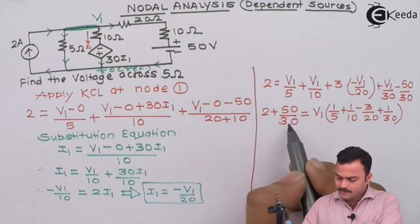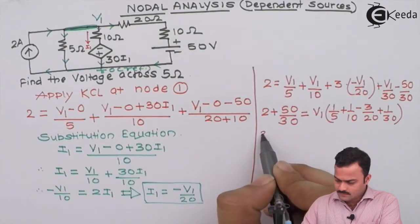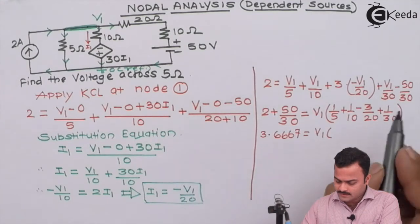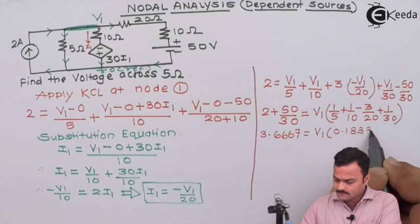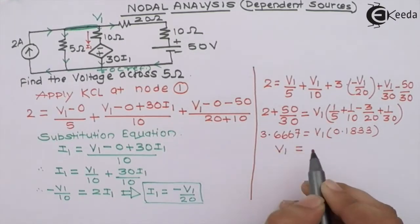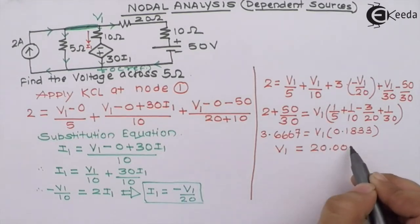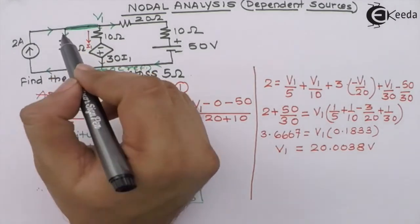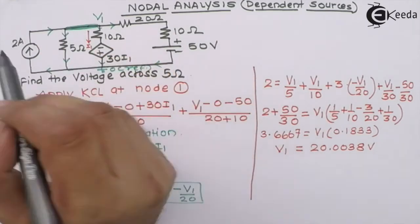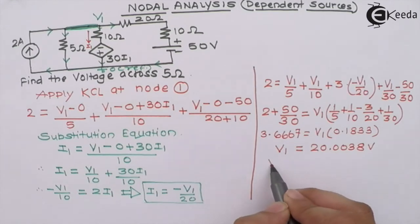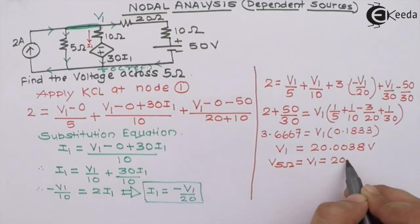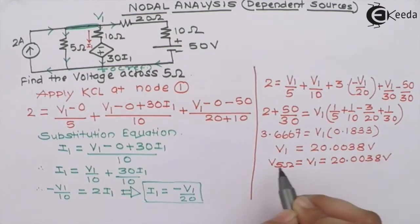After simplifying this, what we get is 2 plus 50 by 30 as 3.6667 equals V1, and after solving this we will get 0.1833. So finally we will get a node voltage as 20.0038 volts. Now what we want is voltage across five ohm. If you see carefully, five ohm is connected between node 1 and the reference. Hence I can say whatever the node voltage we got, that is nothing but voltage across five ohm. So V 5 ohm is same as V1, which is 20.0038 volt, is the final answer.